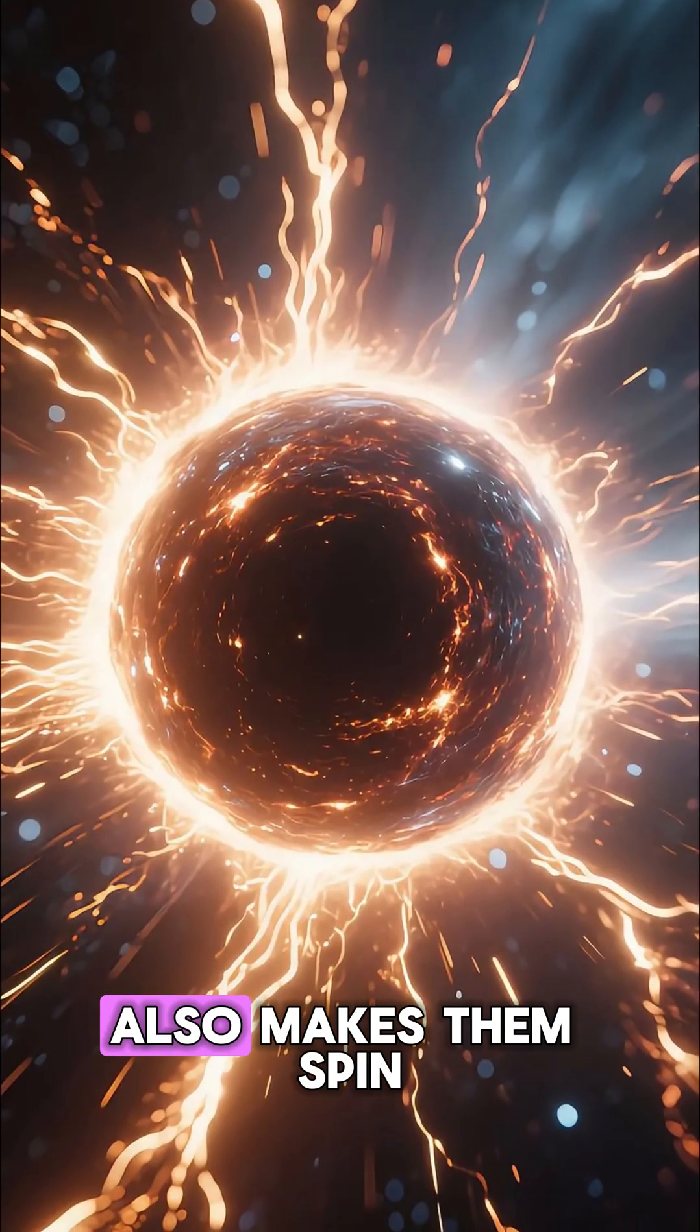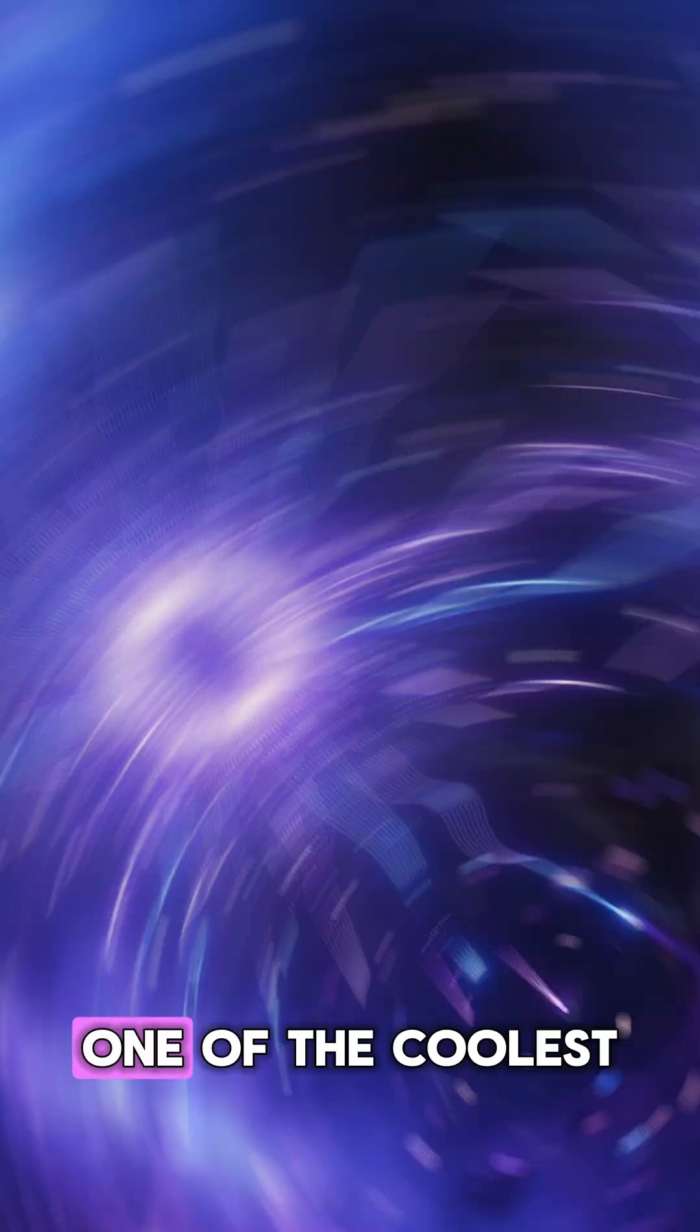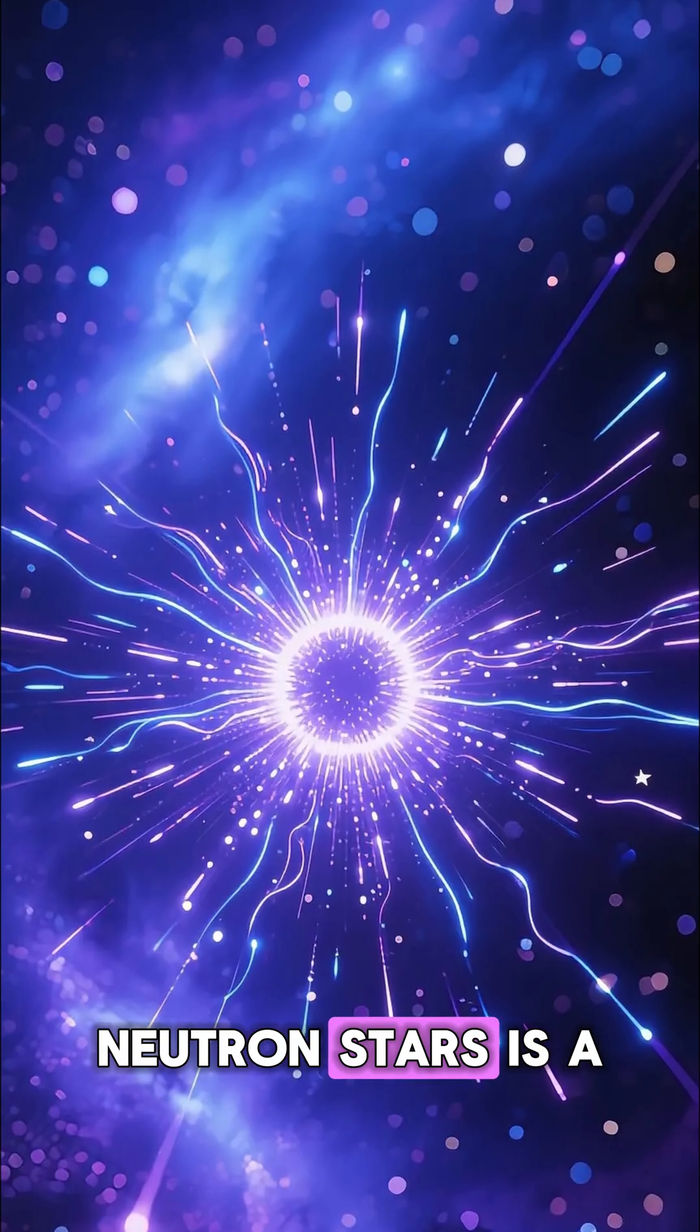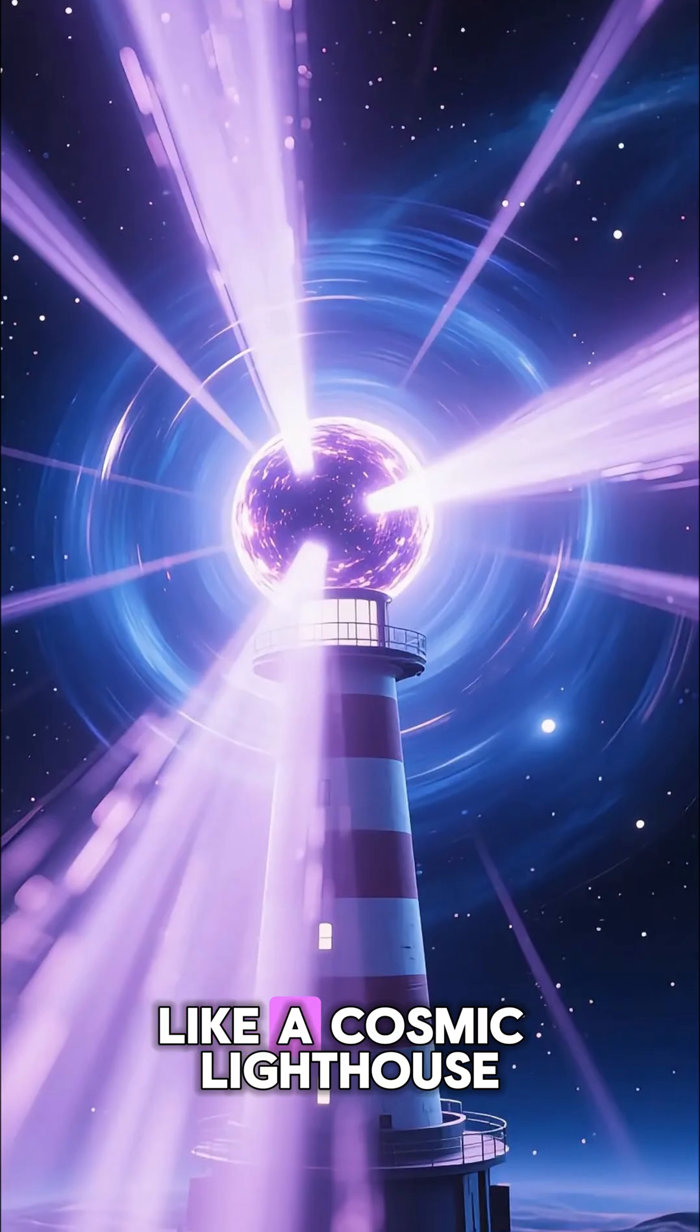This insane gravity also makes them spin incredibly fast, some rotating hundreds of times every single second. One of the coolest types of neutron stars is a pulsar. As it spins, it shoots out beams of radiation, like a cosmic lighthouse.